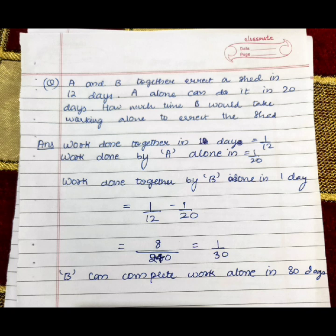we would subtract the total work done by both of them by the work done alone by A, that is 1 upon 12 minus 1 upon 20, which would give us 1 upon 30. Hence, the work completed by B alone would be 30 days.